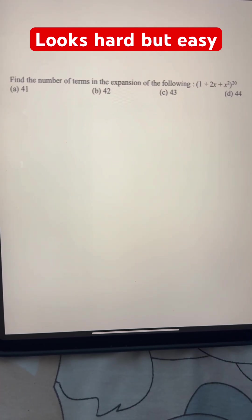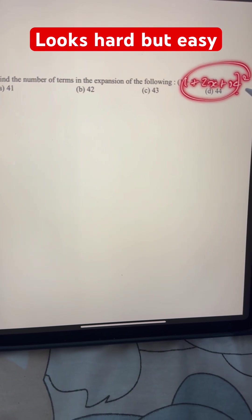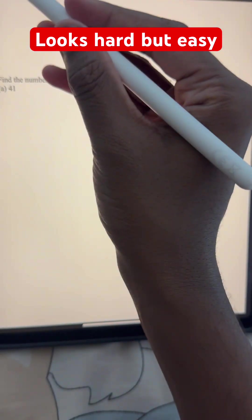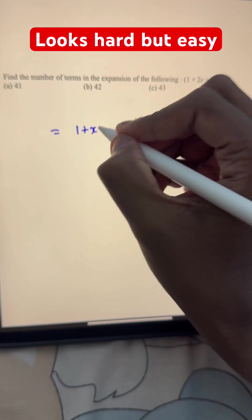And how do we do that? We can see that this is 1 plus 2x plus x squared, and we can recognize that this is a perfect square. How is that? Because you can write this as 1 plus x, the whole squared.